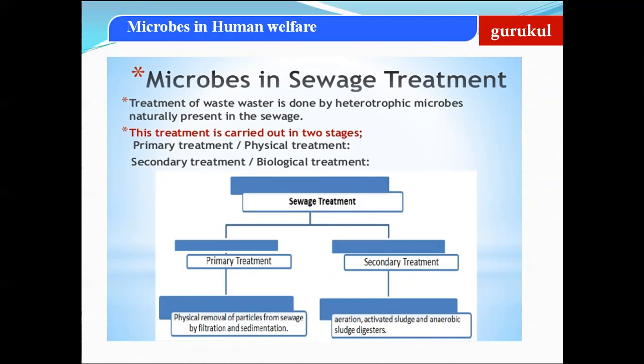After sedimentation, all impurities settle at the bottom of the primary treatment tank. This sediment is called primary sludge, which is used for land filling. The supernatant — the clear water above — is then subjected to secondary treatment. The supernatant still contains unseen impurities which are disease-causing microbes, and must therefore be treated further.